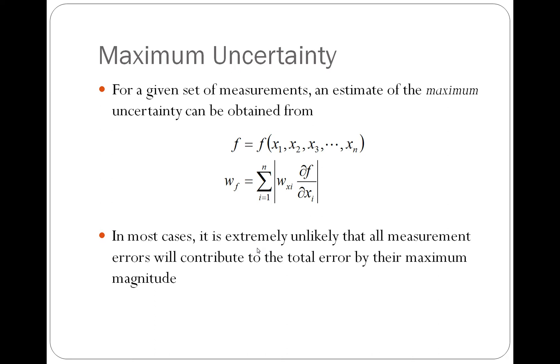One is the maximum uncertainty. So for a given set of measurements to estimate the maximum uncertainty, what we can do is we can take the function that contains all of our different measurements that have uncertainty values associated with it. So this top line right here represents a function that has multiple measurements associated with it: x1, x2, x3, up to xn. These are all measured values that have some uncertainty associated with it. All of these measurement values have some uncertainty, and I'm going to denote the uncertainty as W here in this formula, x sub i. So this x sub i is the uncertainty in each of these x values. So x1 has some W sub x1, x2 has some W x sub 2, so on and so forth.